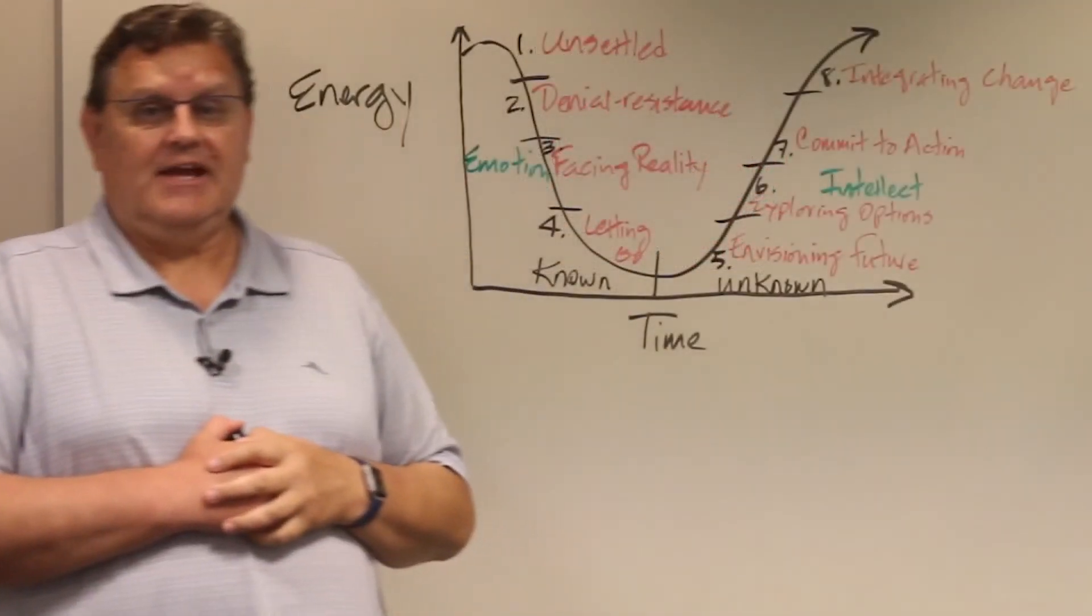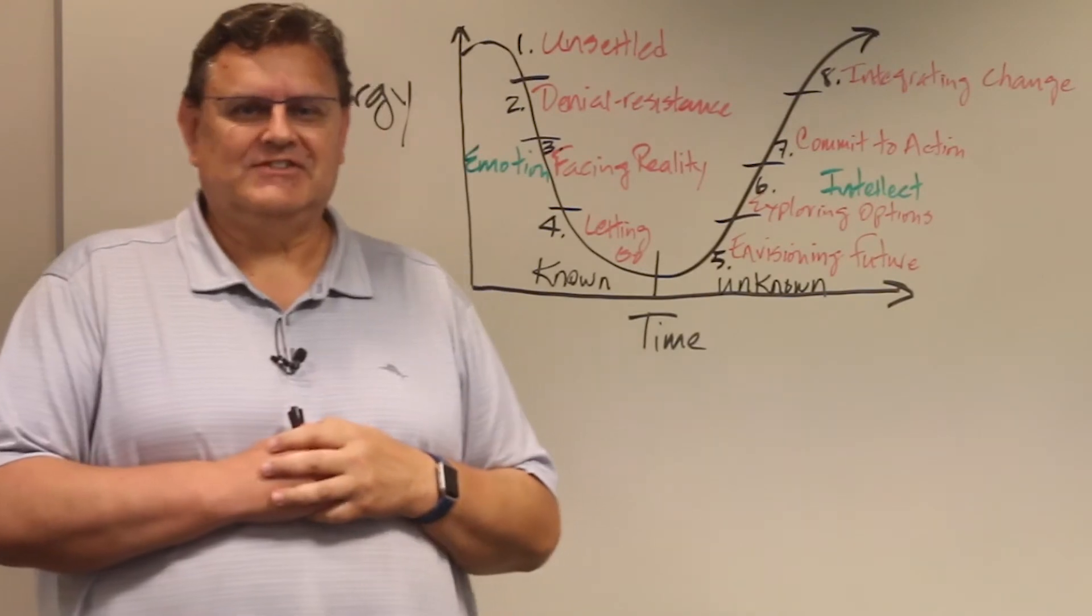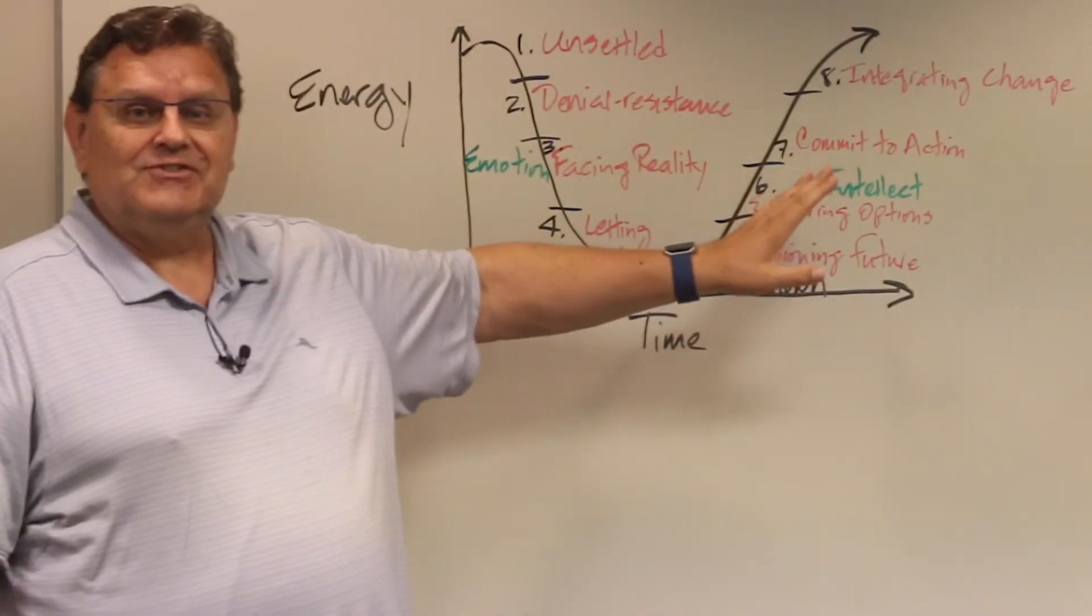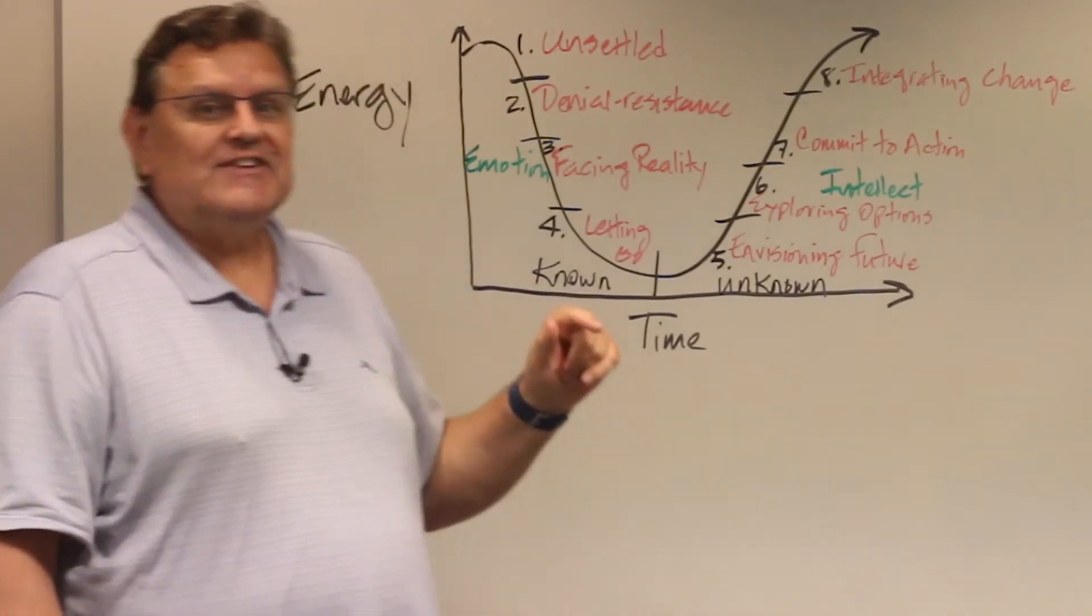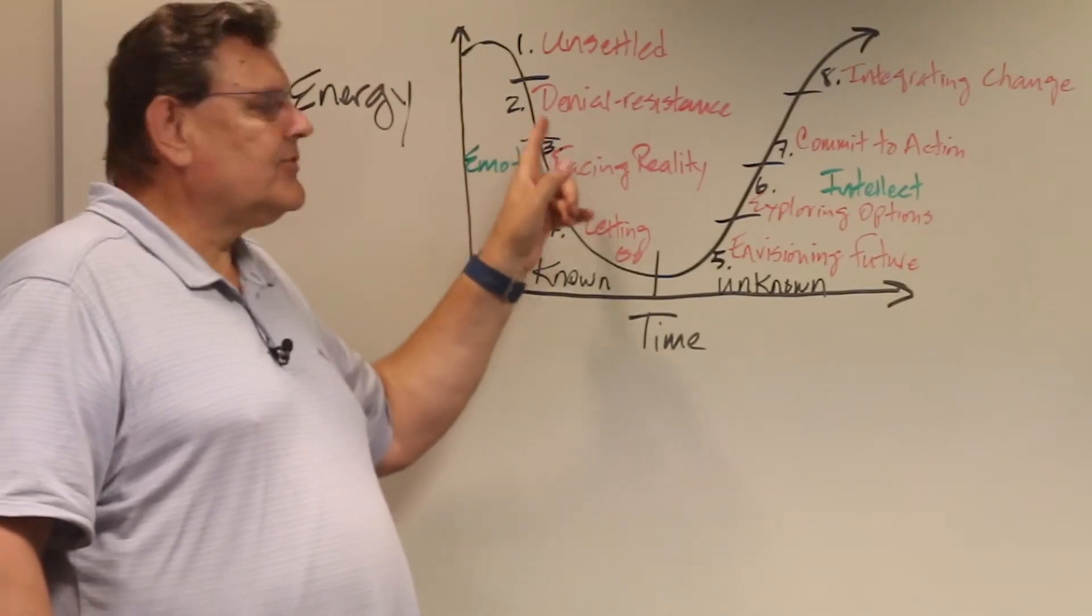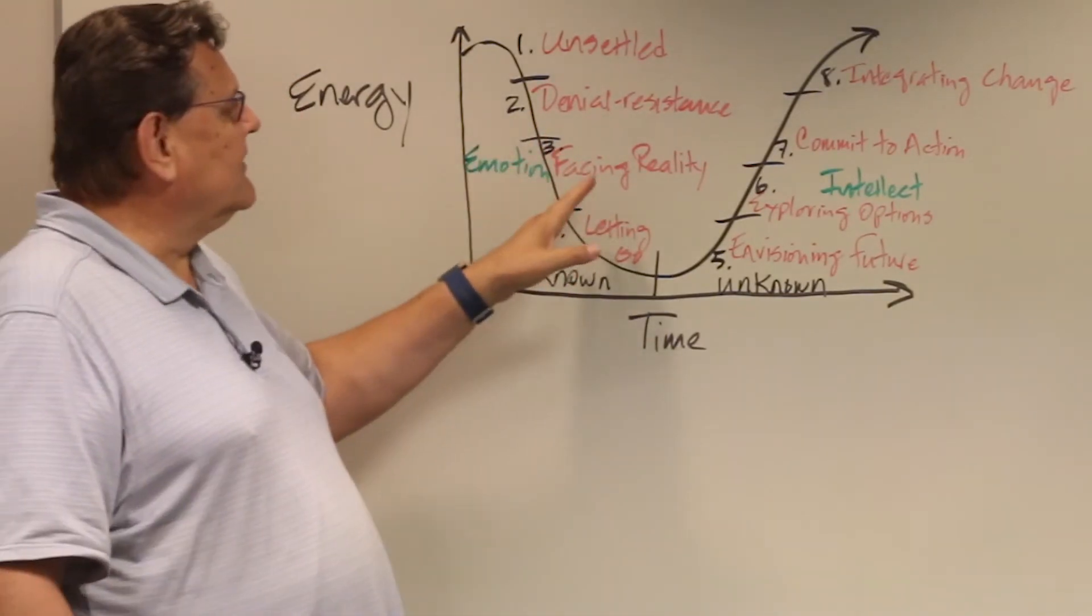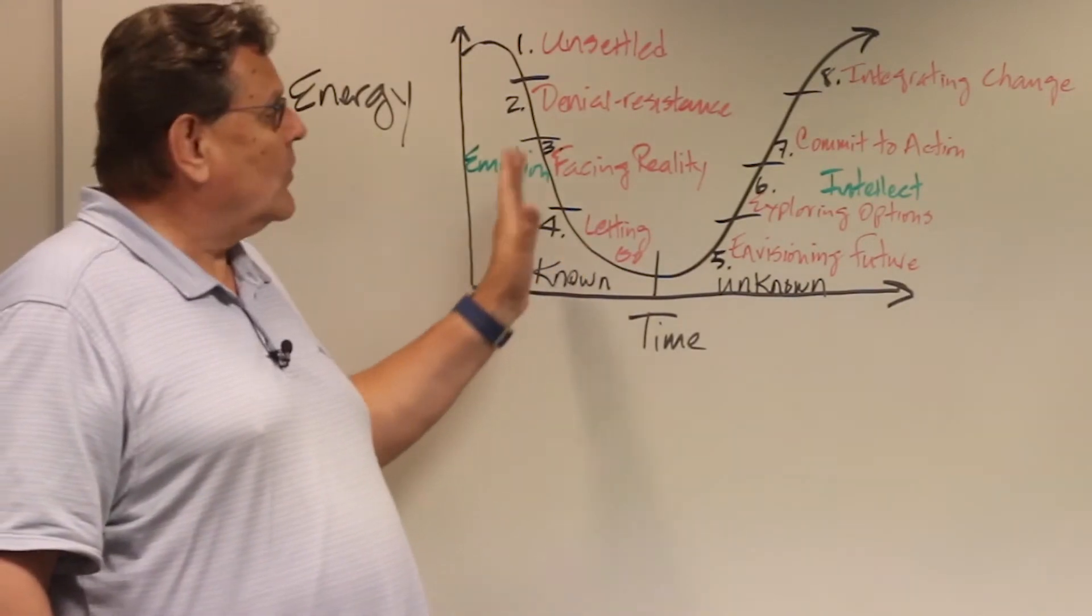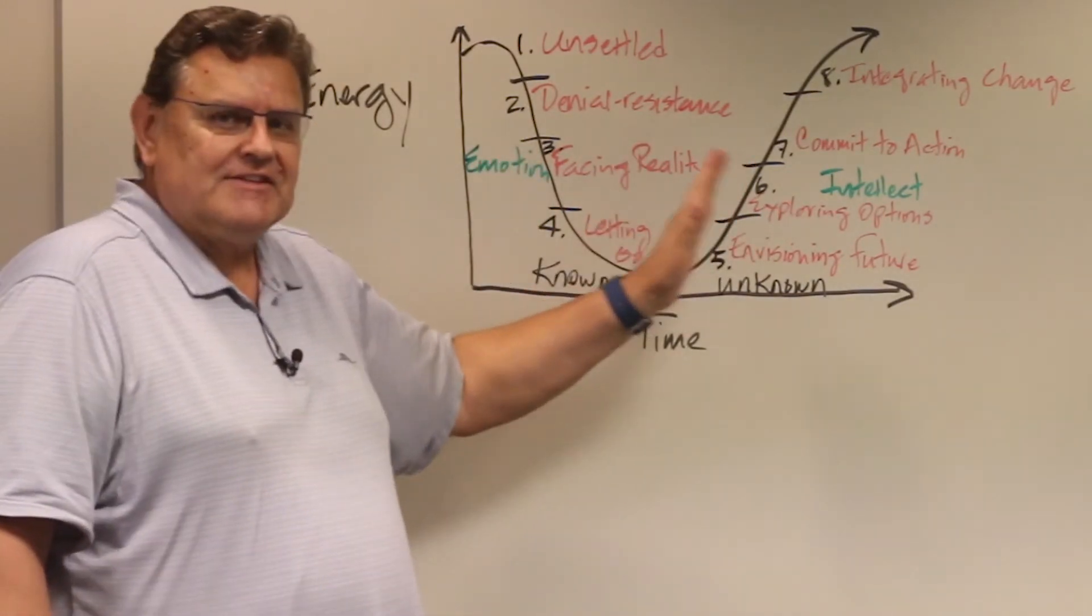For example, in the RCA today, the Vision 2020 process is actually envisioning what we could be. We're talking about options, but also, at the same time, we're doing the emotional work of helping ourselves deal with denial and resistance, facing reality, and then grieving what we need to let go of. So we're actually accomplishing these at the same time.